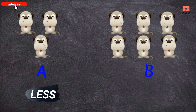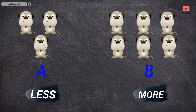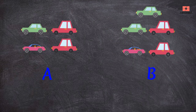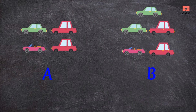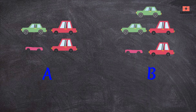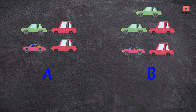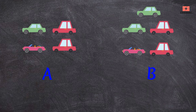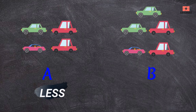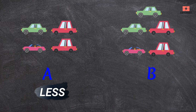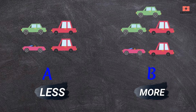A has four cars and B has five cars, so A has less cars and B has more cars.